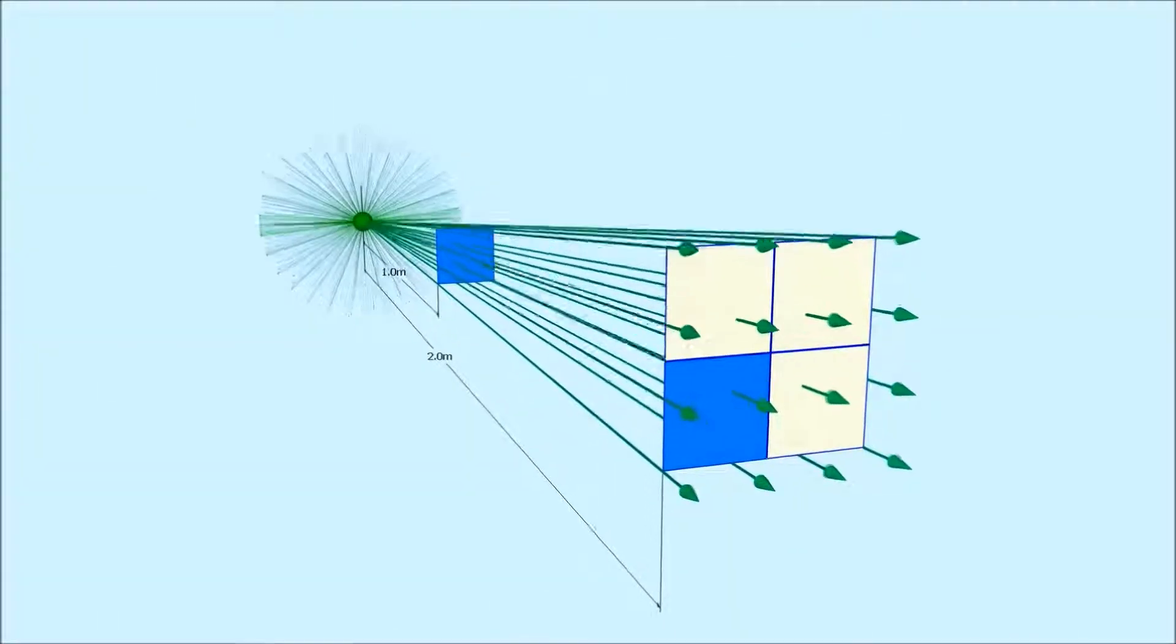Zooming in, we can see that our original area now only has 4 rays passing through it. As per the inverse square law, as we move twice as far away, we have 1 quarter the intensity of light passing through the area.